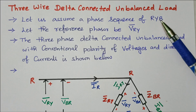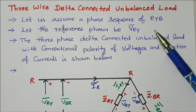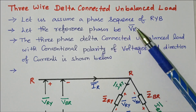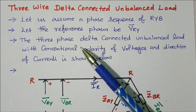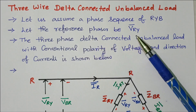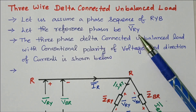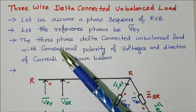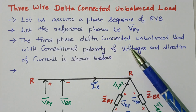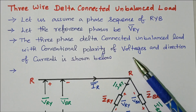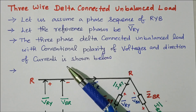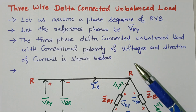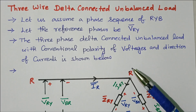The balanced load video is available separately; details are given in the description box. This is coming under unbalanced load. Let us assume a phase sequence of R-Y-B: red, yellow, blue. Let the reference phasor be V-R-Y — the voltage across R-phase and Y-phase — taken as a reference phasor vector.